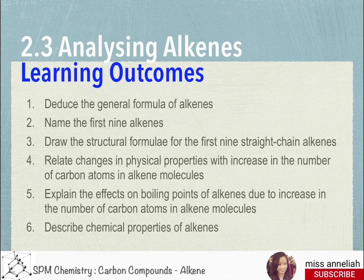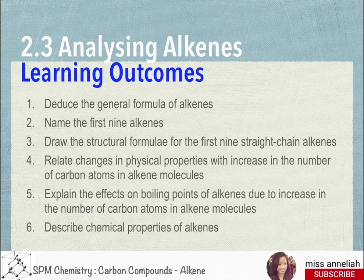Section 2.3: Analyzing alkenes. The learning outcomes are: 1. Deduce the general formula of alkenes. 2. Name the first nine alkenes. 3. Draw the structural formula for the first nine straight-chain alkenes. 4. Relate changes in physical properties with an increase in the number of carbon atoms per molecule of alkene. 5. Explain the effect on boiling point of alkenes due to the increase in the number of carbon atoms per molecule.